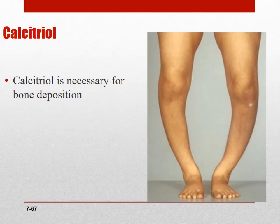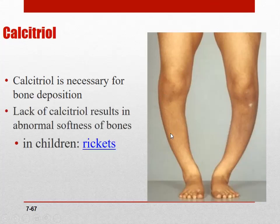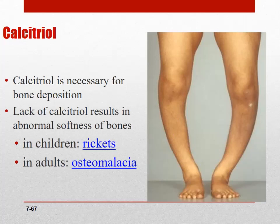This is called rickets in children and osteomalacia in adults — same disease process, which is softening of the bone, otherwise known as demineralization. You lost the minerals, or never had them in the bone in sufficient concentration. With bracing and proper nutrition, there is some therapy for this condition.